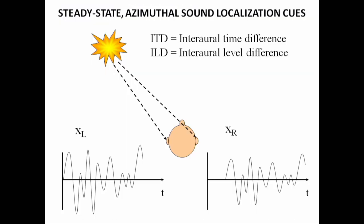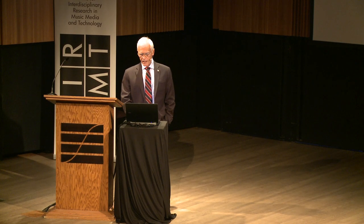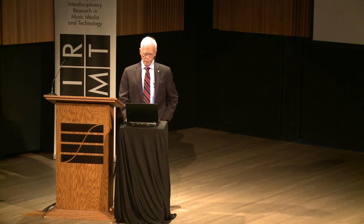We begin with azimuthal sound localization, with a source off to the listener's left. Because the source is off to the listener's left, the sound in the left ear arrives before the sound in the right ear, and also the sound in the left ear is more intense. These are respectively the interaural time difference and the interaural level difference, and they are the main cues by which we localize sounds in the azimuthal plane.